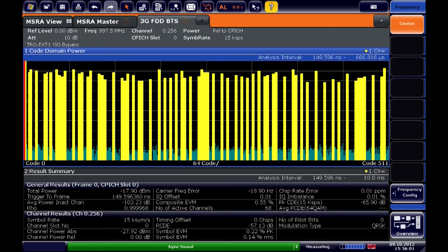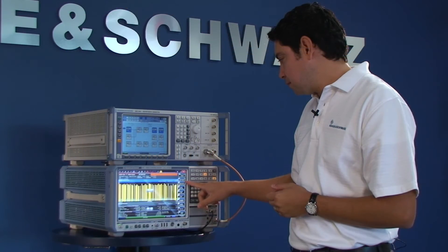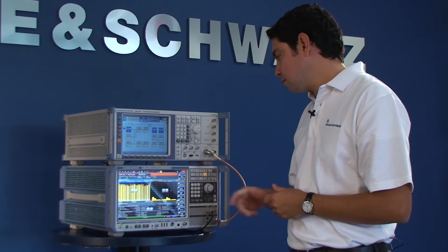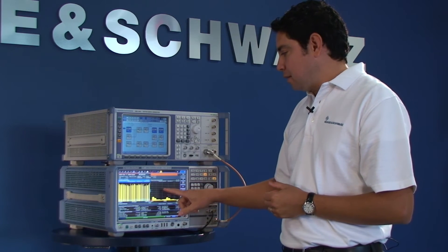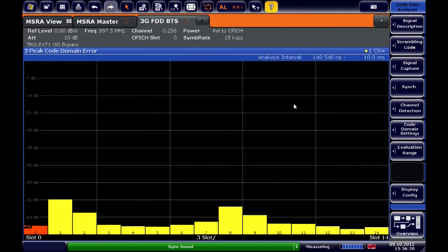Now to further analyze the incoming signal, I'm going to enable one more view, and that will be the peak code-domain error. When I enable my peak code-domain view, I can see now that there are certain slots during the transmission that have constantly higher EVM than the rest. This is an area of problem for this particular base station that I'm emulating.